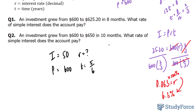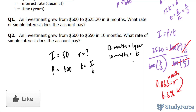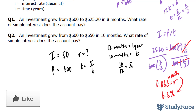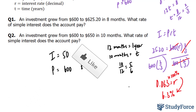10 months in years is 5/6. The reason for that is we take 12 months in one year, we have 10 months, and we're looking for t. If you cross multiply, you end up with 10/12, which equals 5/6.